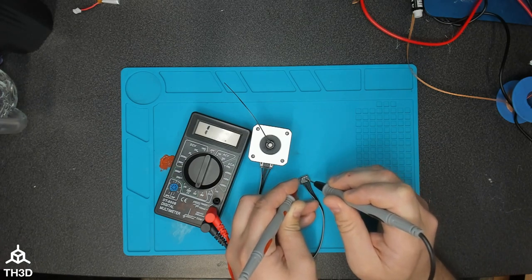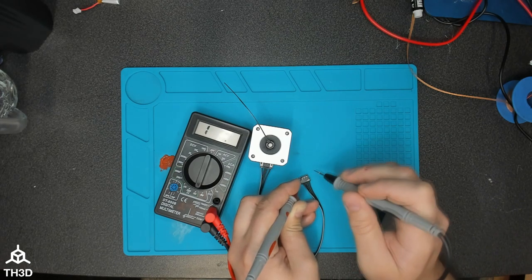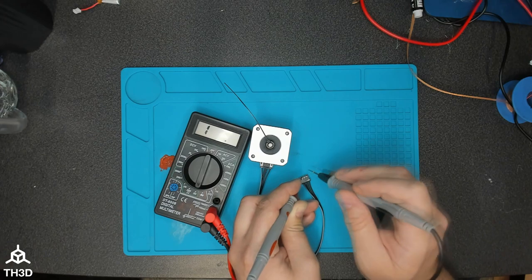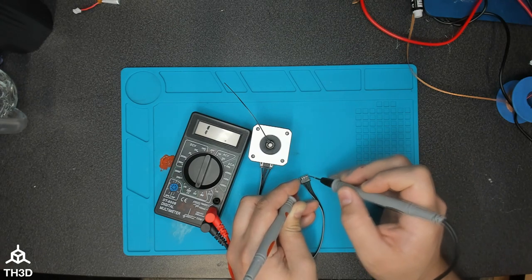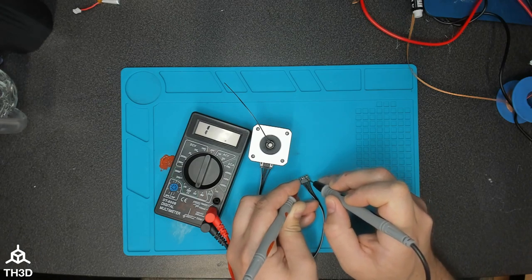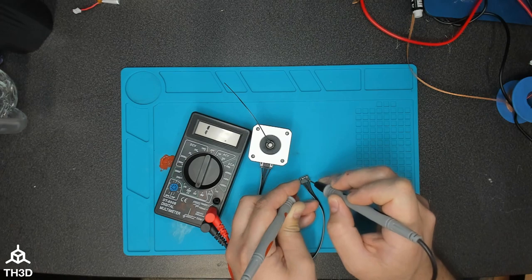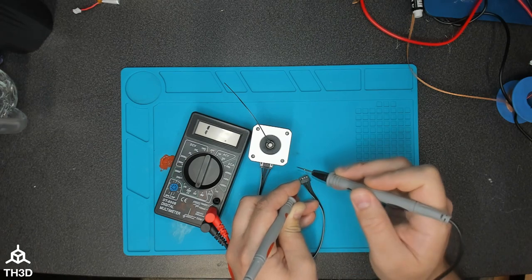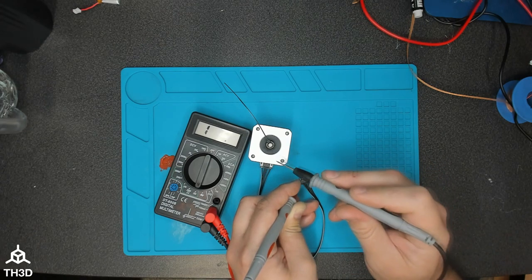Now the other coil should read about the same. It should be within 0.2 ohms of each other or less. Less is better. Just to show you guys, I shouldn't have any readings across any of these other pins. If you see here I'm touching these other pins I'm not getting any readings. If you get readings across these other pins, that means there's something wrong with either your cable or more likely your stepper motor.